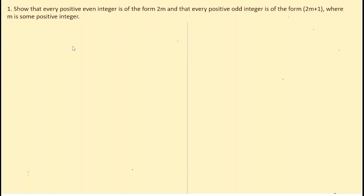The first question is: show that every positive even integer is of the form 2m, and that every positive odd integer is of the form 2m plus 1, where m is some positive integer. Before going into the solution, let us try to understand some preliminary concepts which you have already studied in your lower classes.